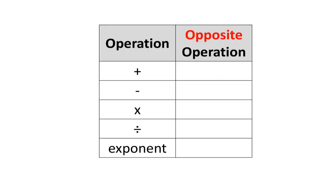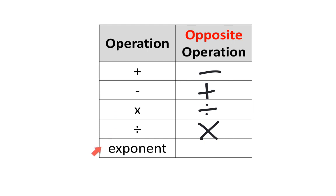I want you to think of the major operations in math and their opposite operations. The opposite of addition is subtraction, and the opposite of subtraction is addition. The opposite of multiplication is division, and the opposite of division is multiplication. And the opposite of an exponent is something called a root — you're most familiar with a square root. I want you to keep this in mind today.